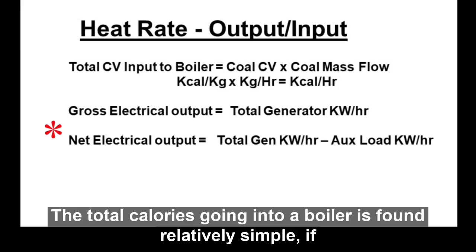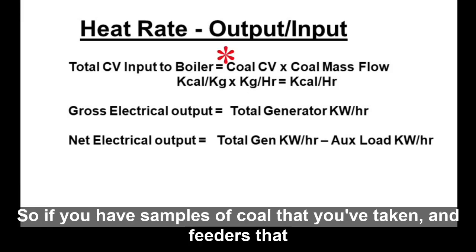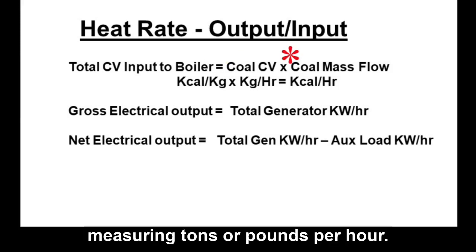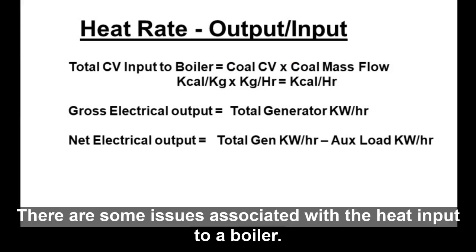The total calories going into a boiler is found relatively simply if you know the calorific value of the coal and the coal flow rate. If you have coal samples and feeders that measure in tons or pounds per hour, you can readily calculate coal flow times calorific value.